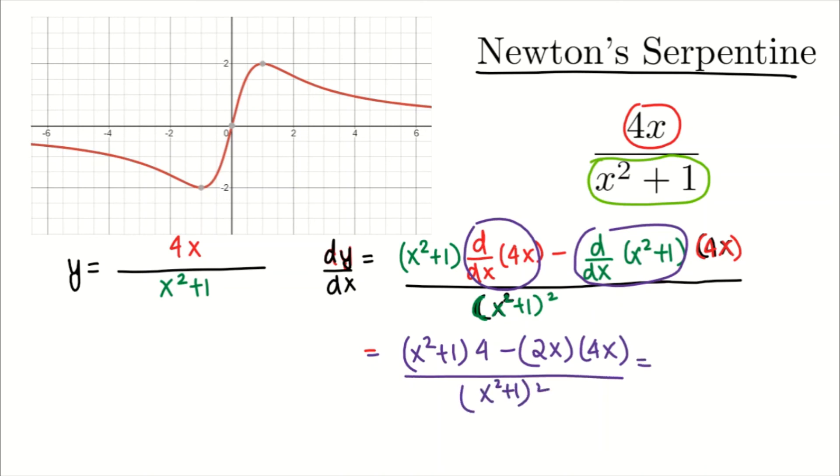If you just work out the math, it's not at all difficult. This comes out to be 4 minus 4x squared divided by 1 plus x squared, squared. Or we can write this in a better way as 4 times 1 minus x squared over 1 plus x squared, squared.